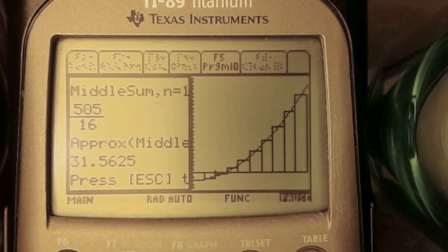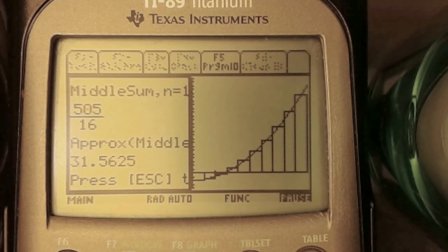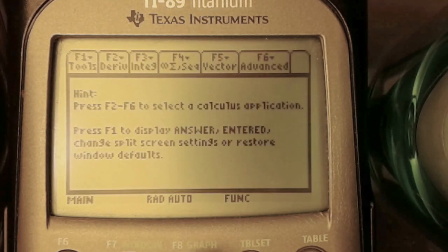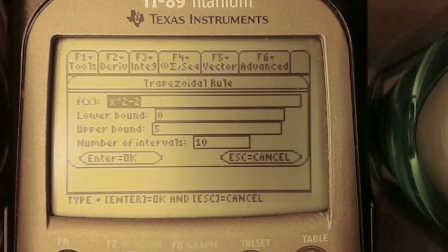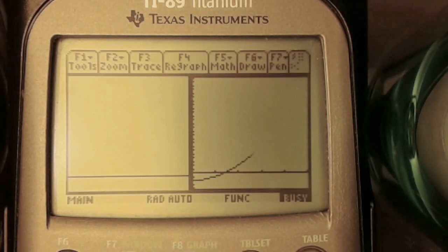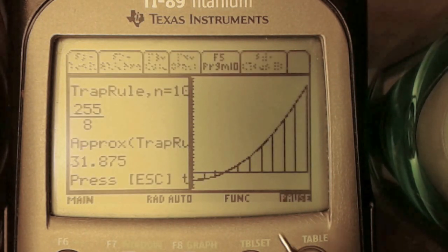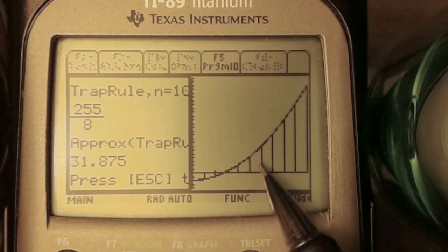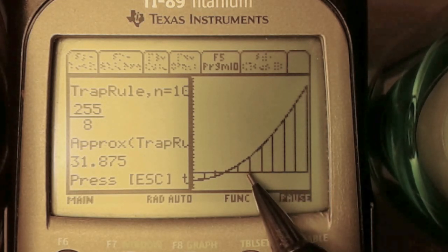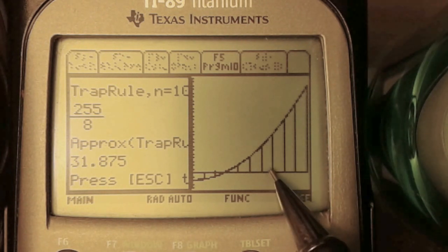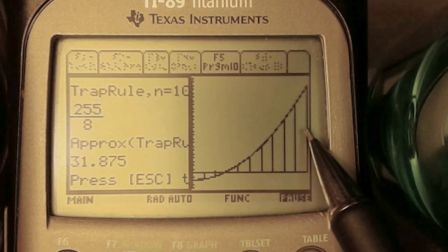Now let's try a trapezoidal rule. As you know, a trapezoid is a quadrilateral with one pair of parallel sides. Here we can see that this is one trapezoid, another trapezoid, and another trapezoid, and so on.